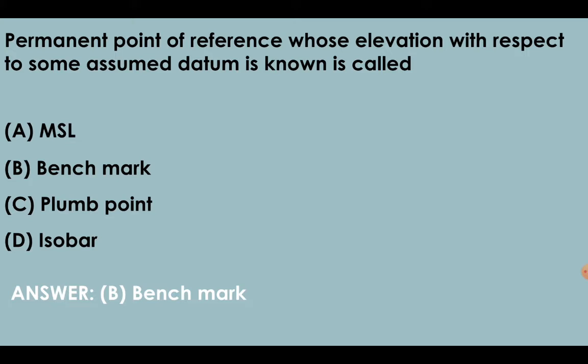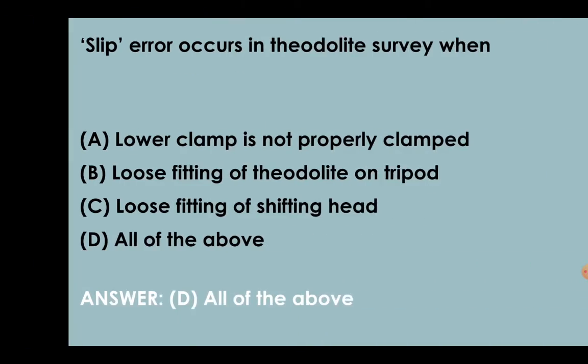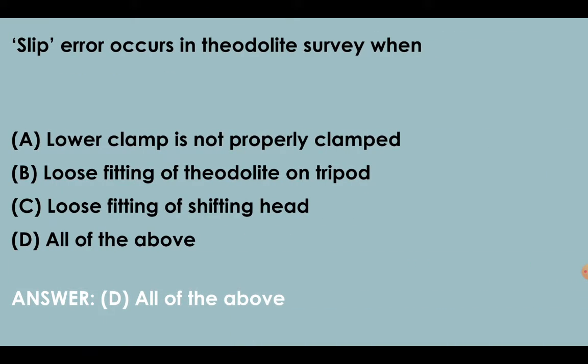Permanent point of reference whose elevation with respect to some assumed datum is known is called benchmark. Slip error occurs in theodolite survey when lower clamp is not properly clamped, loose fitting of theodolite on tripod is done, or loose fitting of shifting head is done.